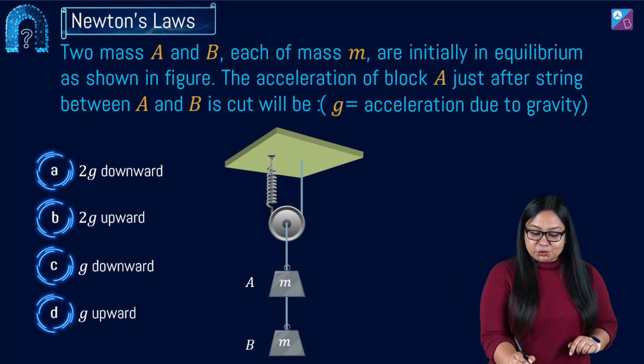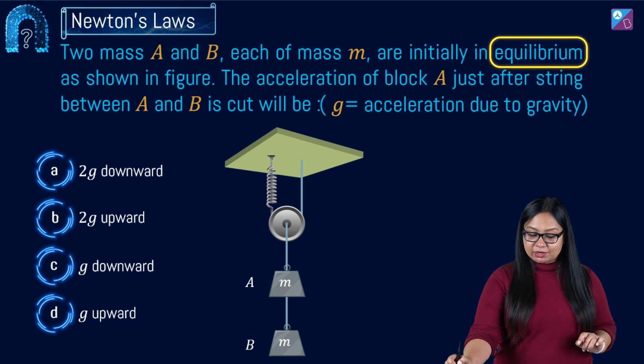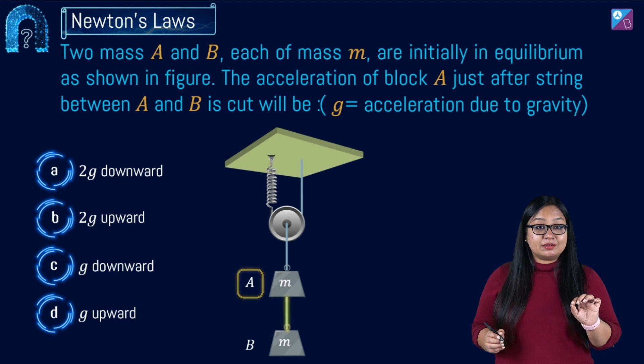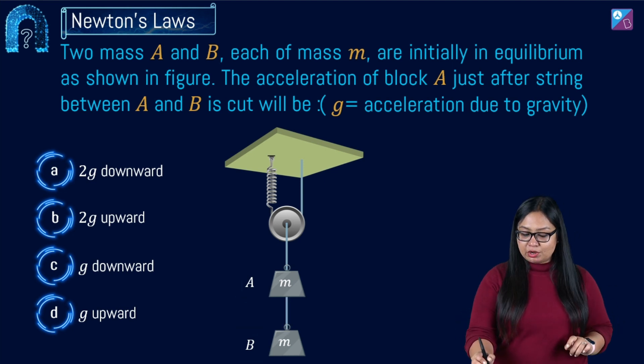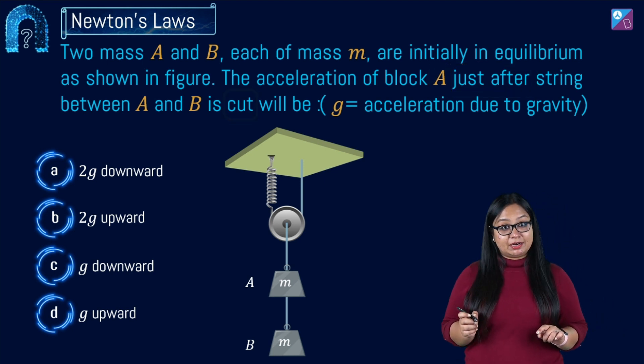Let's see, the two masses A and B, each of mass M, are initially in equilibrium. Now, the string between A and B is cut. We have to find out the acceleration of block A just after the string between A and B is cut.